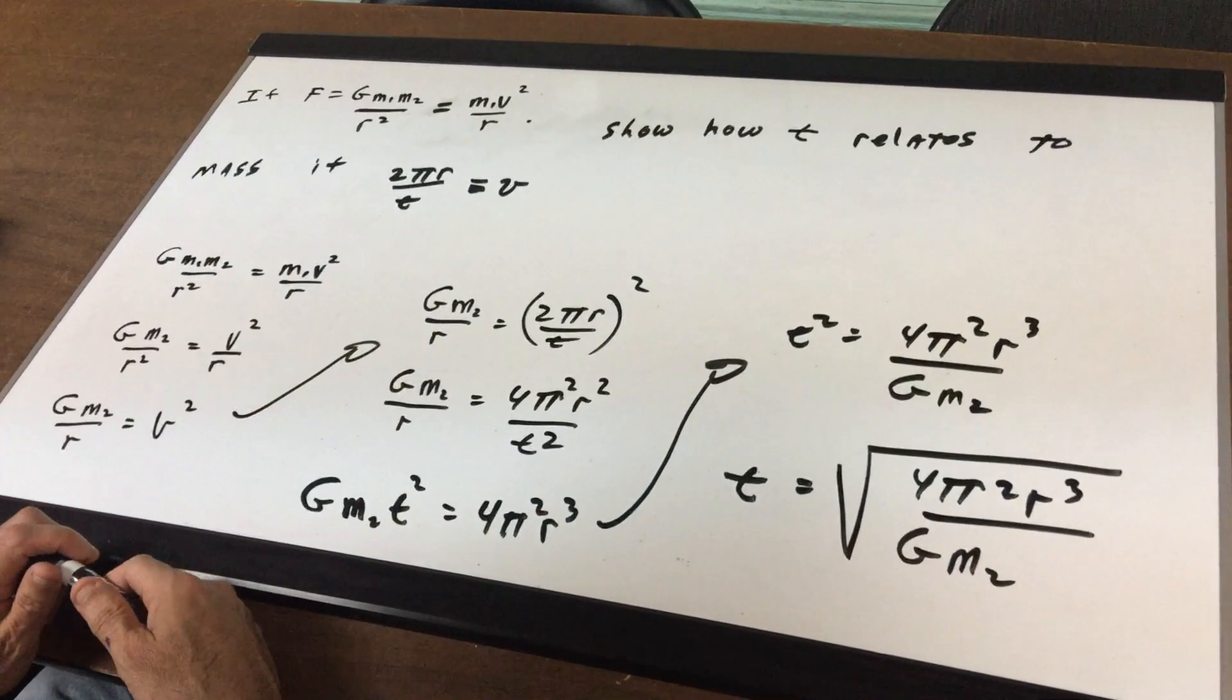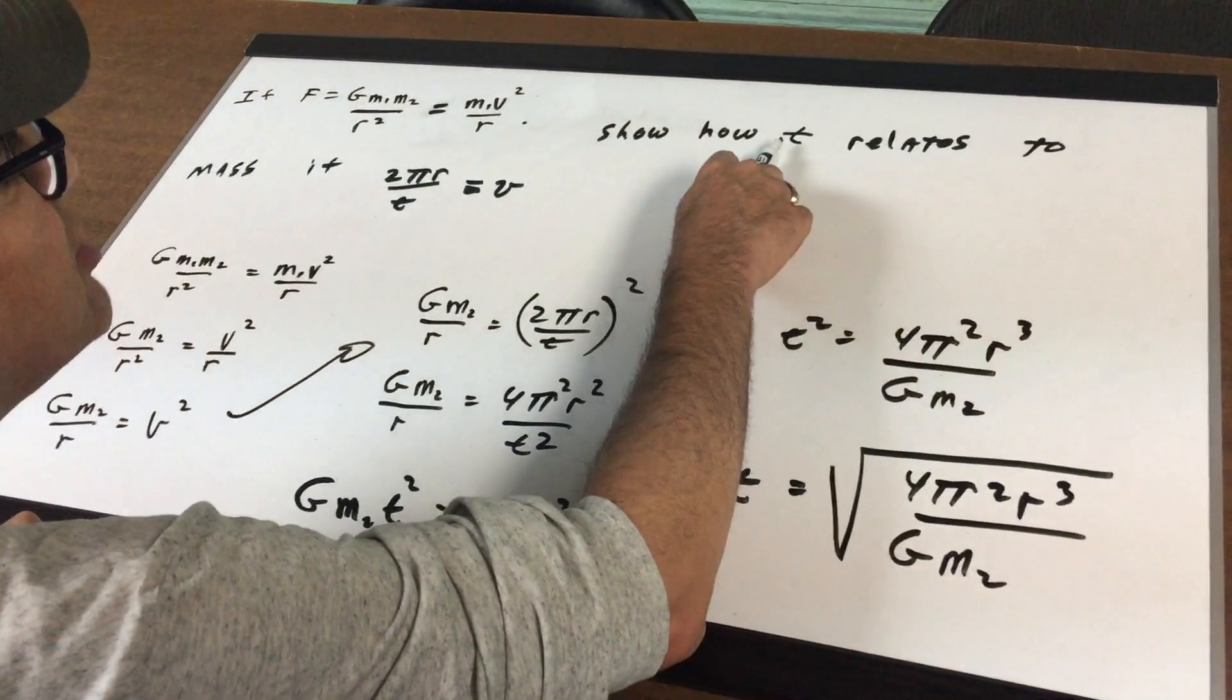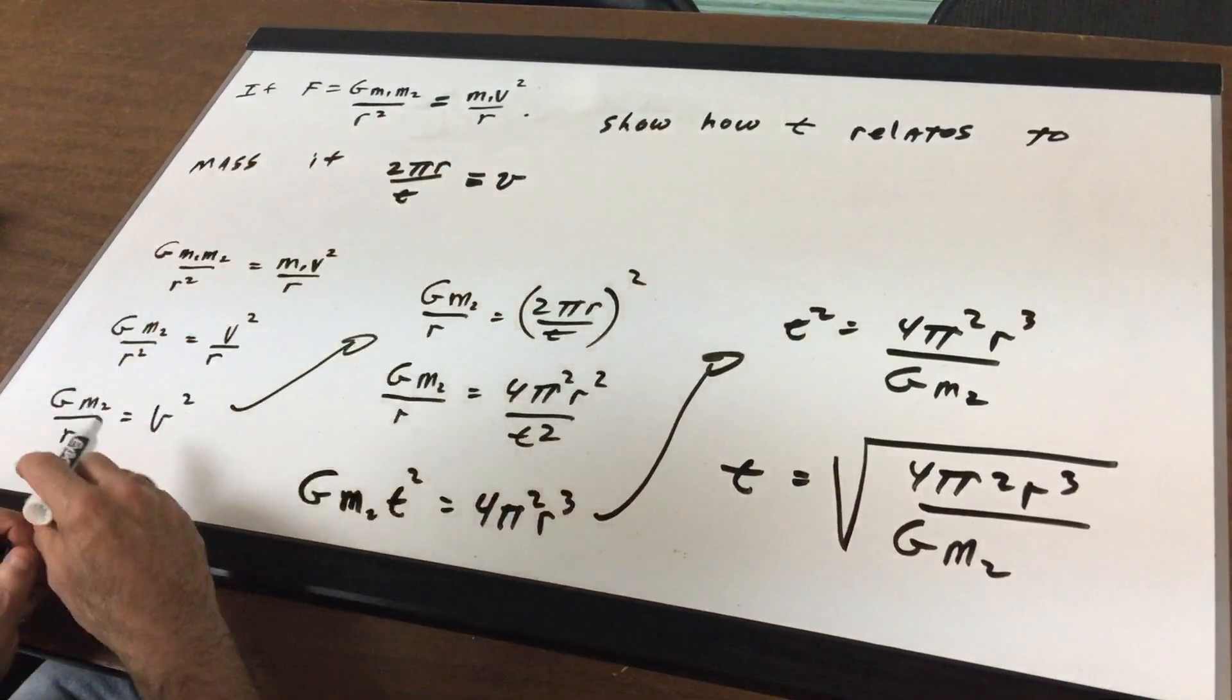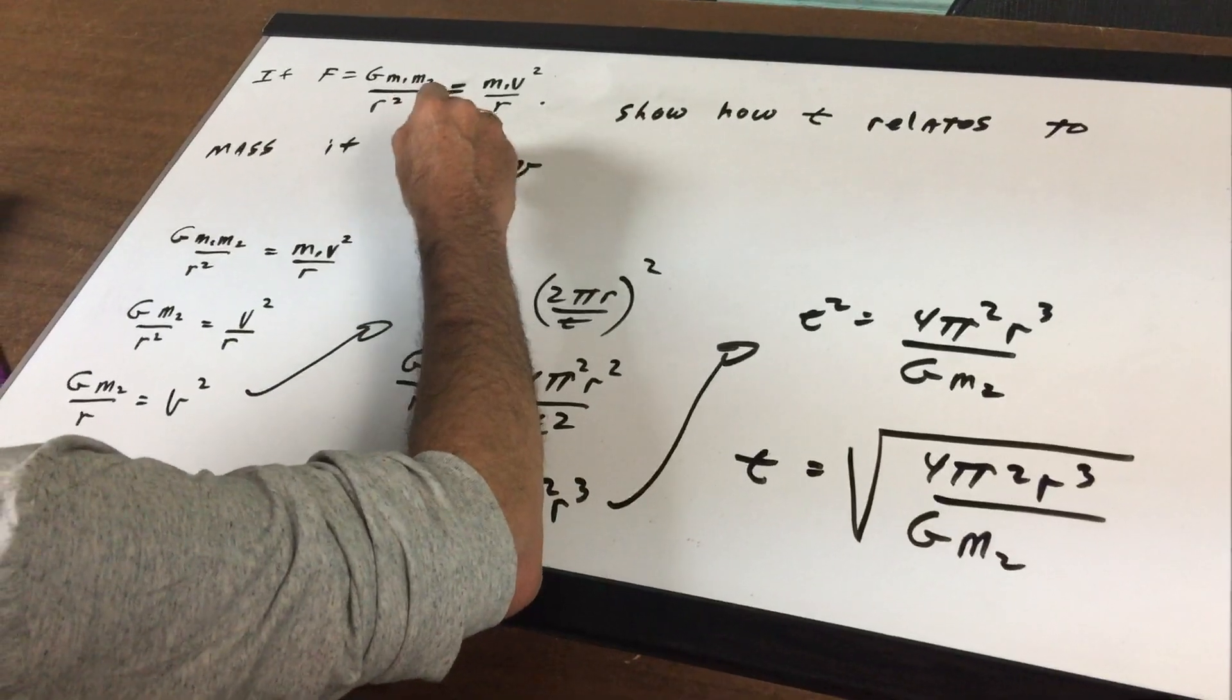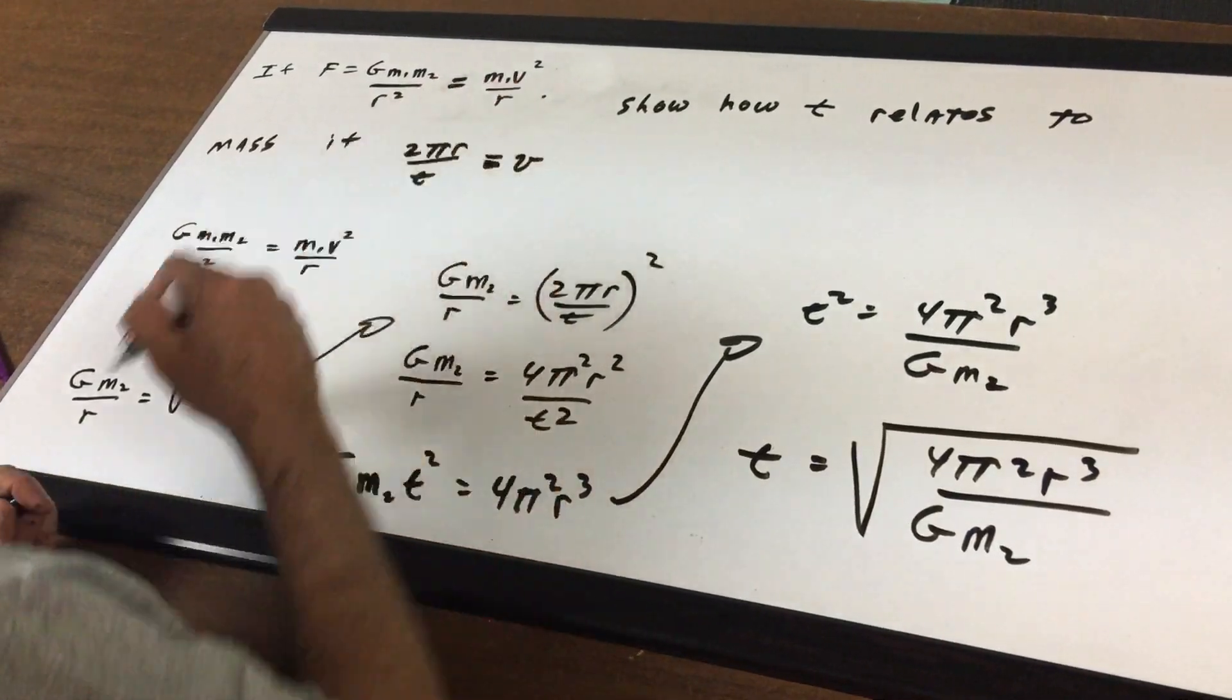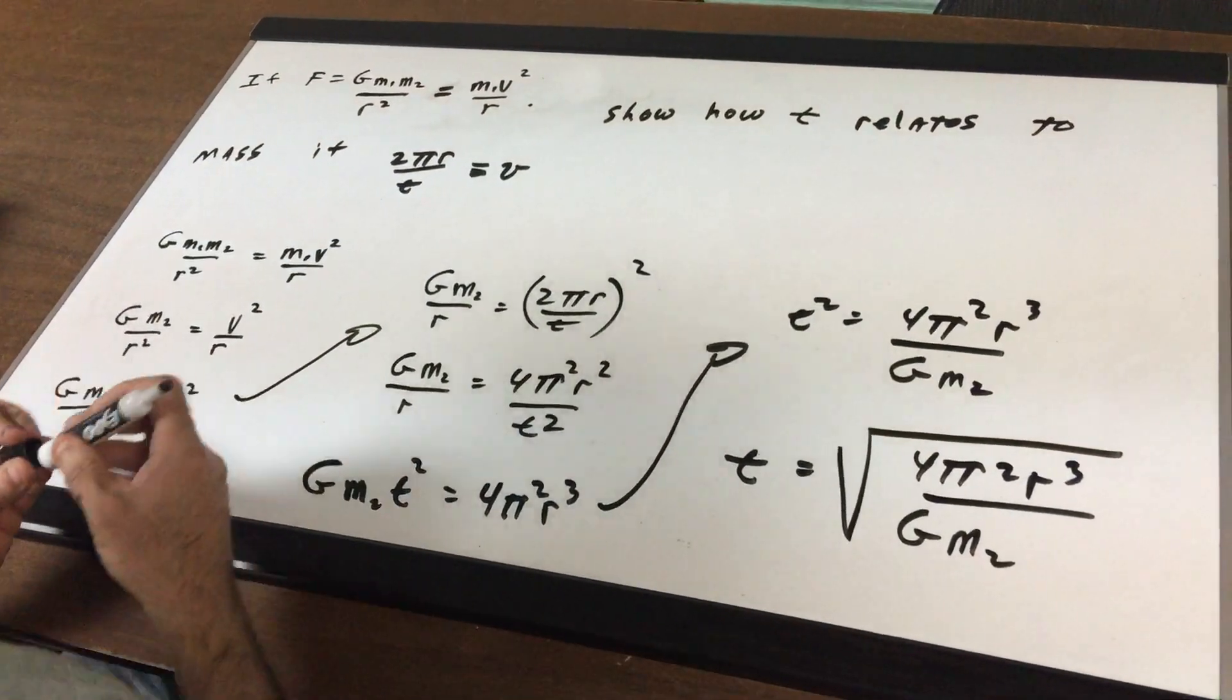And what I want to do here is to show how t, which is time, relates to mass if 2 pi r over t is v. Where would I start something like this?